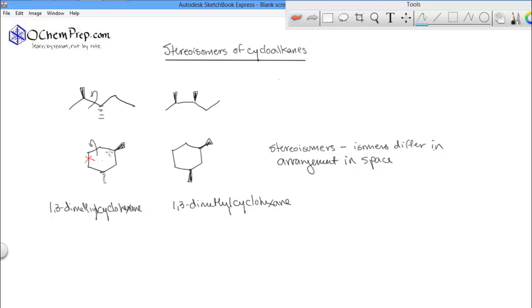But this one with one coming out and one going back is called trans. So we put a trans out front. So trans means opposite. And cis, C-I-S, means the same side.